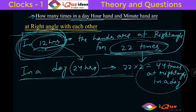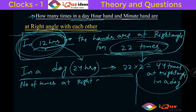Let me say how many times in a week. Number of times at right angle in a week. If I say that what will happen? So first of all in 12 hours, in 12 hours it is 22 times.